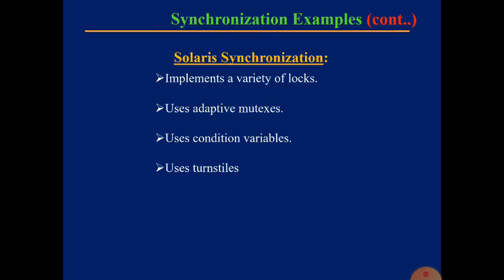Solaris synchronization implements a variety of locks to support multitasking, multi-threading, and multi-processing. The second point is it uses adaptive mutex for efficiency when protecting data from short code segments. The third point is it uses conditional variables and reader-writer locks.